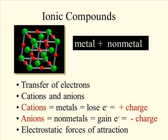Ionic compounds are the bonding between a metal element and a non-metal element with the transfer of electrons. The cations are the metal ions that lose electrons to get a positive charge, and the anions are the non-metal elements that gain an electron to become negatively charged. These positive and negative charges then pull together with electrostatic forces of attraction.